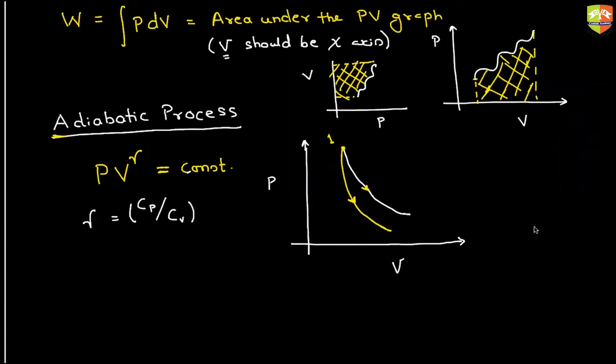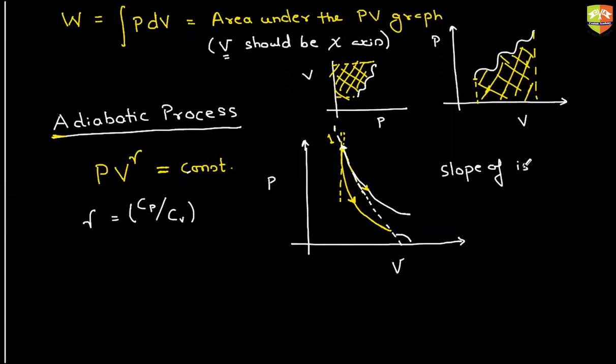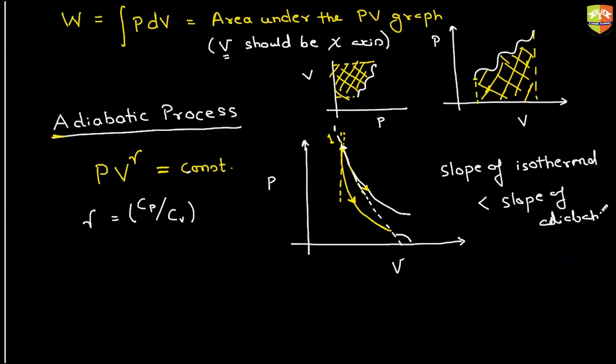I'll just give you the hint. The hint is at this point, the slope of the yellow is steeper than the slope of the white. So the slope of white at that point, slope of the tangent at that point, is you can say lesser. Slope of isothermal should be lesser than the slope of adiabatic. That you have to prove actually. Now the slope at a particular point is nothing but dP by dV.